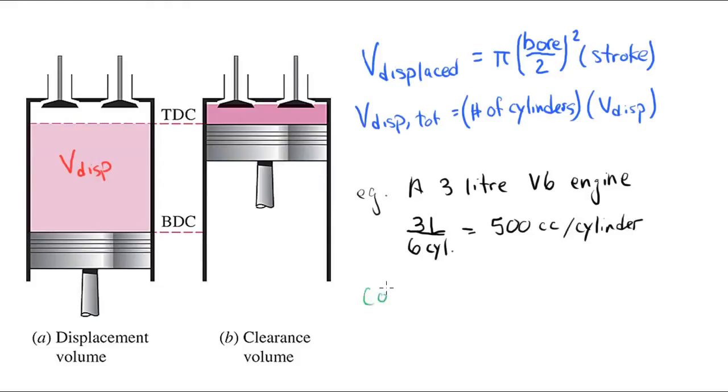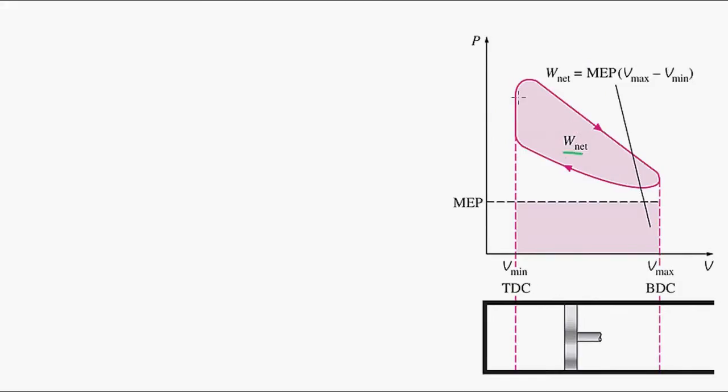Now the important parameter is called the compression ratio of the engine. That's a ratio of the two volumes, so the minimum volume and the maximum volume. This is important because it determines the performance of the engine.